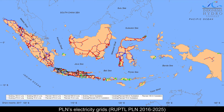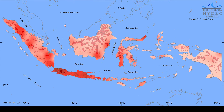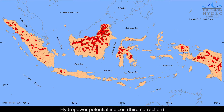The distance from the hydropower plant to the electricity grid is also an important point to be considered. This map shows the existing and planned PLN electricity grids, including the substations and transmission lines. From the map of electricity grids, we can calculate the distance of every hydropower plant location to the nearest substation and generate the indices. Another correction is made to the potential indices considering the distance to the electricity grids, as shown on this map.